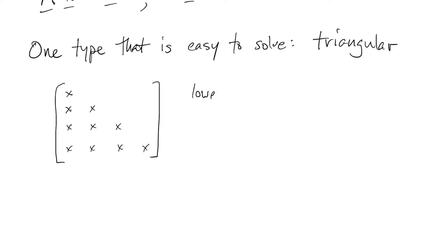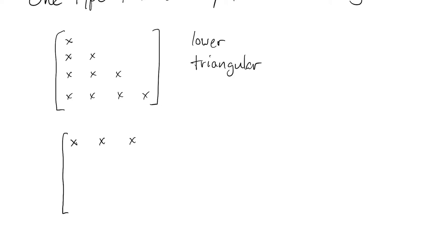So in this case, we would call this matrix here a lower triangular matrix. It only has elements on the diagonal and below. And this would be an upper triangular matrix. So it only has non-zero elements on the main diagonal and above.